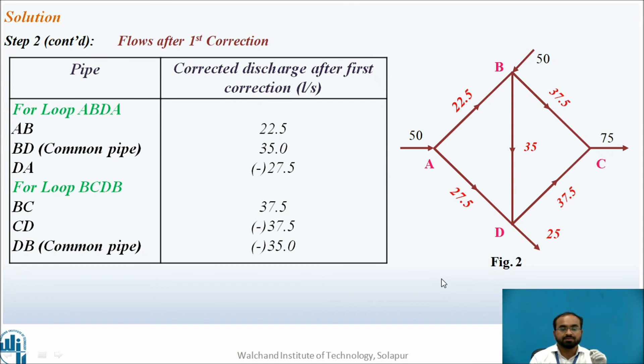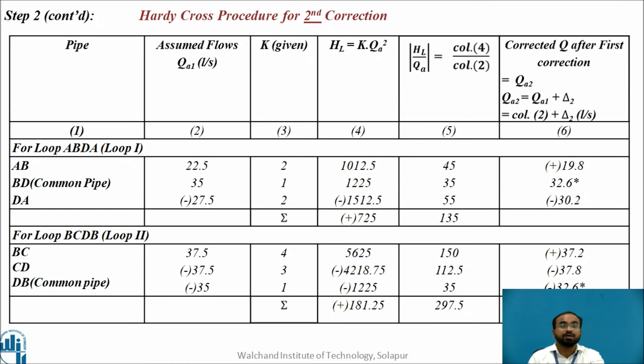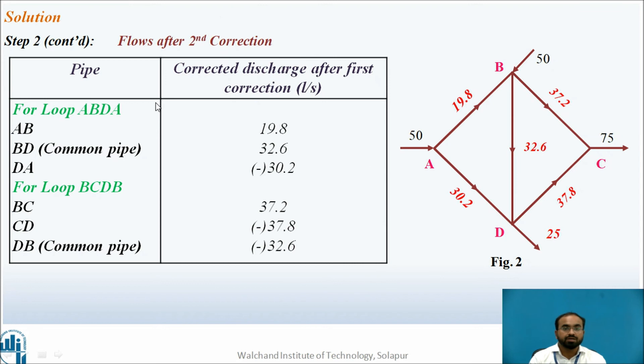The same procedure is done for the second iteration, but in column 2 I use the corrected flow rates from iteration 1, not the assumed flow rates. After iteration 2, the corrected flow rates are: AB equals 19.8, BD equals 32.6, DA equals minus 30.2, BC equals 37.2, CD equals minus 37.8, and DB equals minus 32.6.